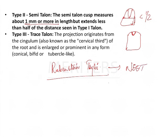Another problem that can occur with talon's cusp is occlusal interference. If the lower incisor is occluding against the upper incisor and a talon's cusp is projecting, it can lead to difficulty in normal occlusion.